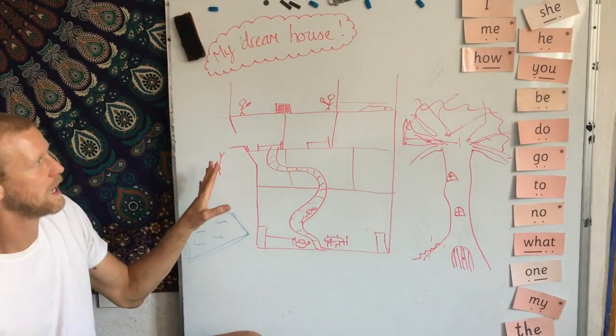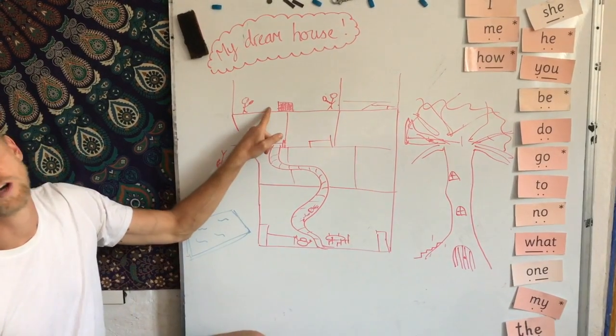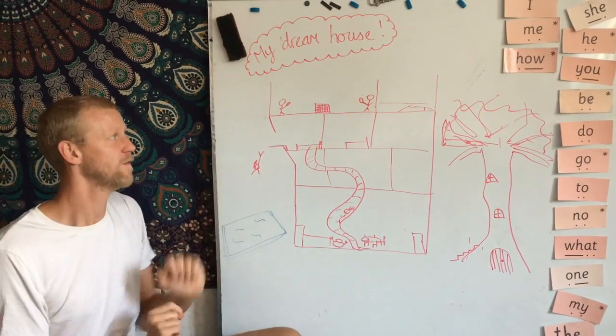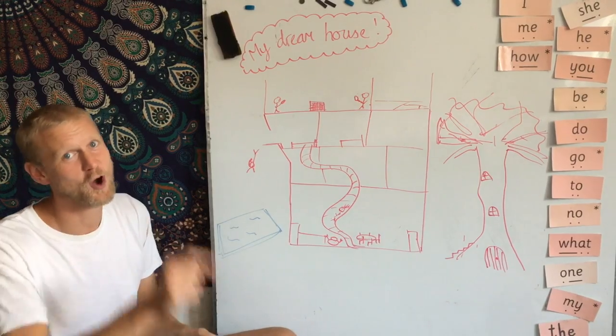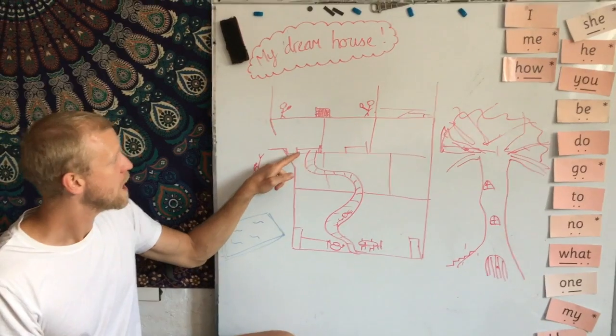Now some of my favorite features are: I've got a tennis court on the roof, I've got a squash court on the roof, pretty cool. This is my bedroom, and from my bedroom you can, if you're hungry, just go down the slide straight to the kitchen.